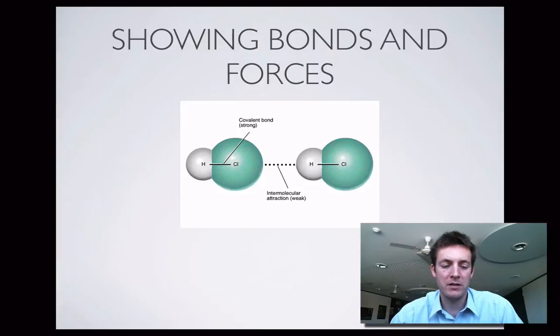So here we are. Here's just a very simple diagram that shows the difference between bonds and forces, or more precisely between intramolecular bonds and intermolecular forces. It's supposed to be a diagram of HCl in the liquid state because these two molecules are quite close together. Here is an intramolecular bond. This straight line here which is a shared pair of electrons between the hydrogen and the chlorine.